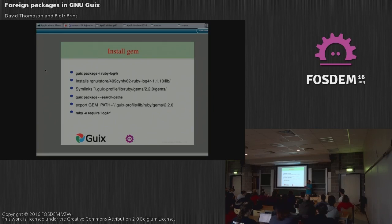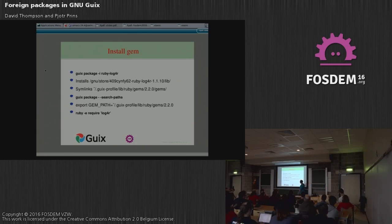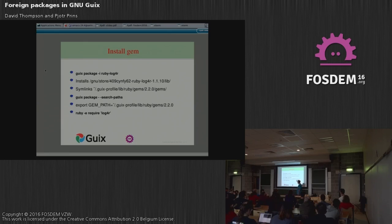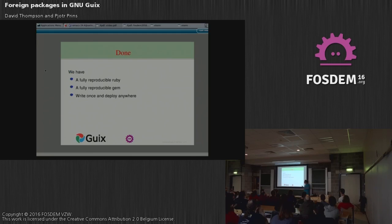When a user types guix package --install ruby-log4r, it will also create automatic symlinks. In the default Guix profile, lib/ruby/gems/2.2.0/gems, it will link to that library. The Guix store is immutable and versioned — all things that define the package ultimately result in a hash value. To tell Ruby where to find this gem, you just add the GEM_PATH. This GEM_PATH is suggested by Guix itself via guix package --search-paths, which lists paths relevant to your system including the Ruby gem path. Then you can just run: ruby -e 'require log4r'. Done. We have a fully reproducible Ruby and a fully reproducible gem. Write it once and deploy it anywhere.